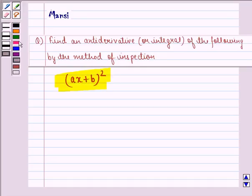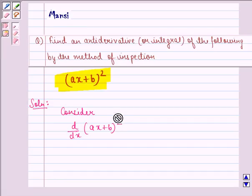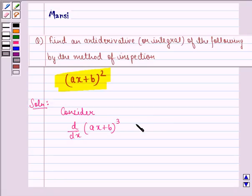So let us start with the solution to this question. Well, first of all, we consider d by dx of ax plus b, the whole square. Now this is ax plus b, the whole cube. So we consider d by dx of ax plus b, the whole cube.